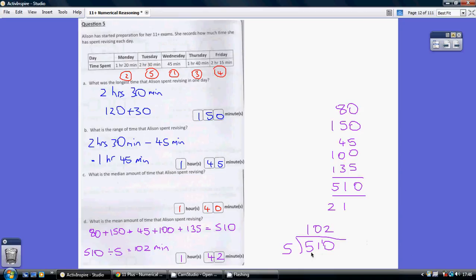I've done that in the bus stop method. Remember you work your way left to right here: how many 5s go into 5? That's 1. How many 5s go into 1? You can't do it - 0, carry the 1. And how many 5s go into 10? That's 2. So 102 minutes.